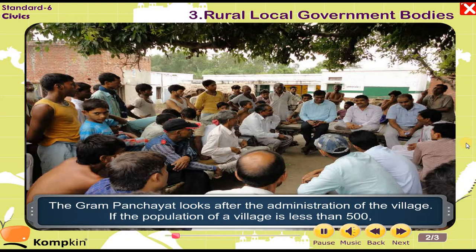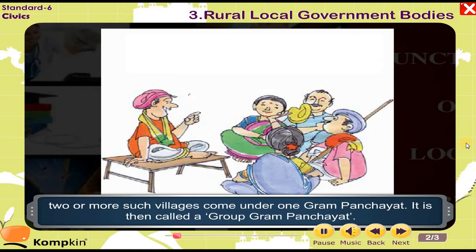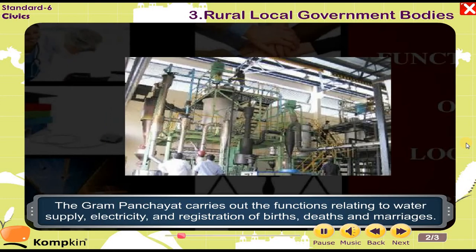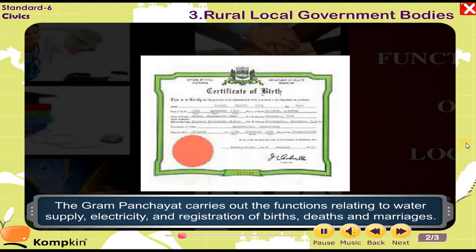The Gram Panchayat looks after the administration of the village. If the population of a village is less than 500, two or more such villages come under one Gram Panchayat, which is then called a group Gram Panchayat. The Gram Panchayat carries out functions relating to water supply, electricity, and registration of births, deaths, and marriages.